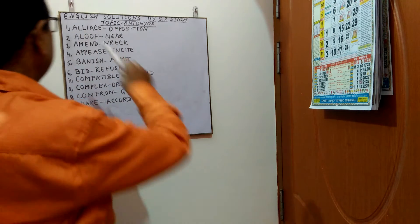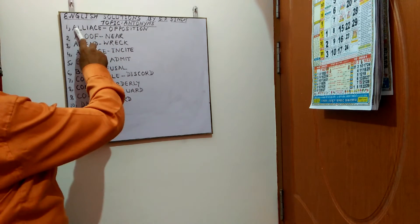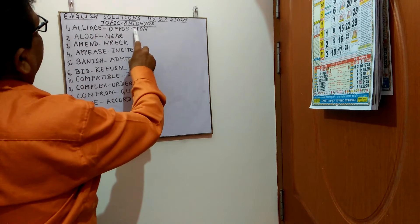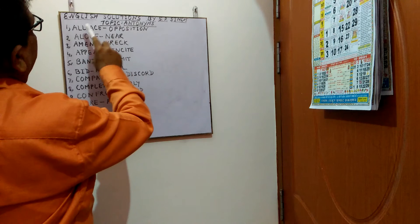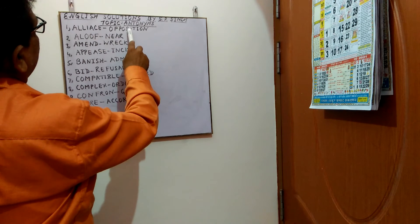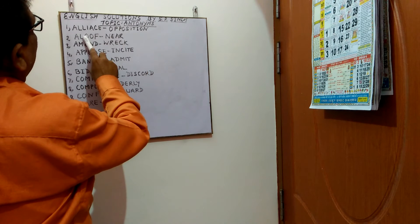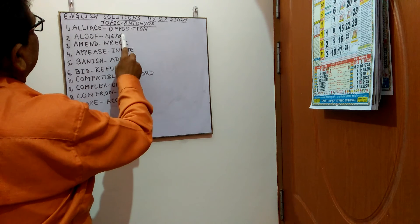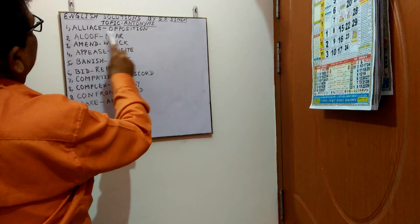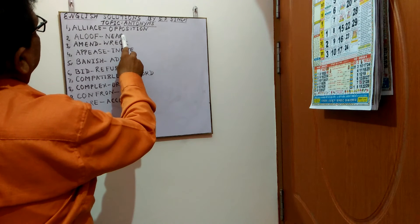First word is alliance, antonym: opposition. The word is aloof, antonym: near.